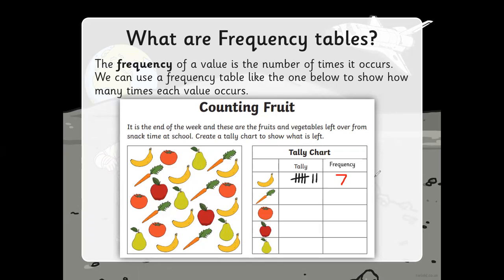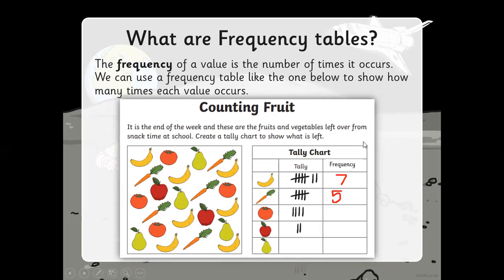The same applies to carrots — count how many carrots there are, which is five, then write the frequency next to it. This is the amount of times it occurs in our data. The same process applies to tomatoes, apples, and pears — just write down their totals in the frequency column.